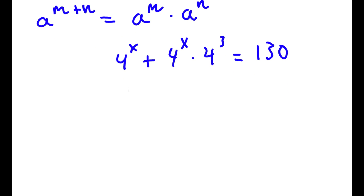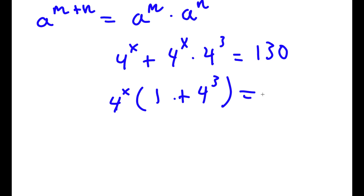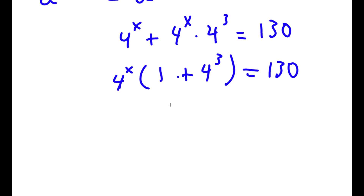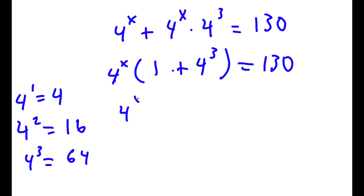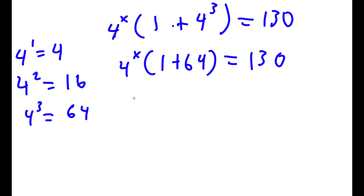From here, I'm going to factor out 4 to the power of x. So I have 4 to the power of x times 1 plus 4 to the power of 3, and this is equal to 1 third. Now 4 to the power of 3: 4 to the power of 1 is 4, 4 to the power of 2 is 16, and 4 to the power of 3 is 16 times 4 which is 64. So now I have 4 to the power of x times 1 plus 64 is equal to 1 third. 1 plus 64 is 65, so 4 to the power of x times 65 is equal to 1 third.